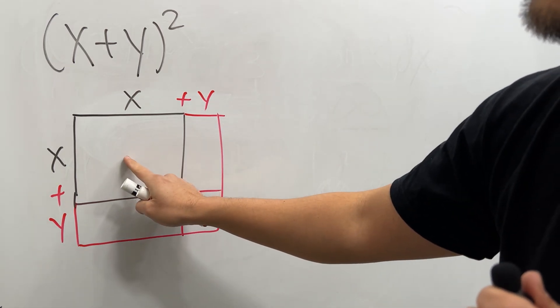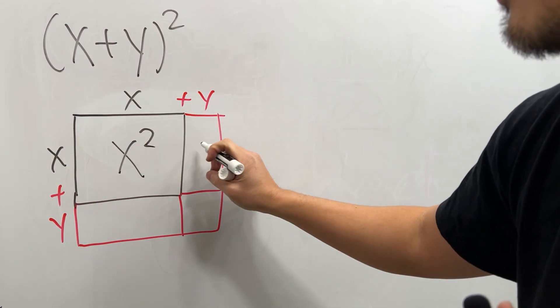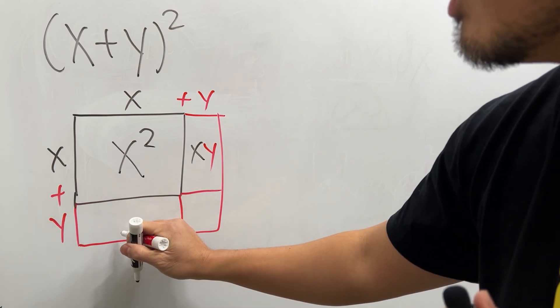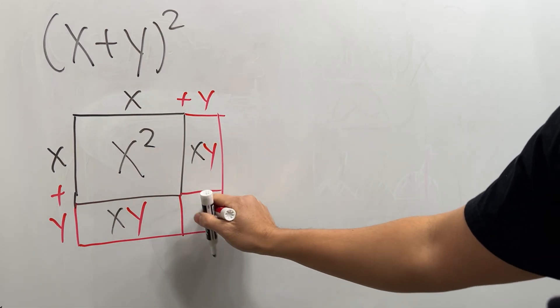The area right here is just x times x, which is x². And then the area right here is just x times y, which is xy. And then the area right here is just x times y again, another xy right here. And then lastly this thing right here is just y times y, which is y².